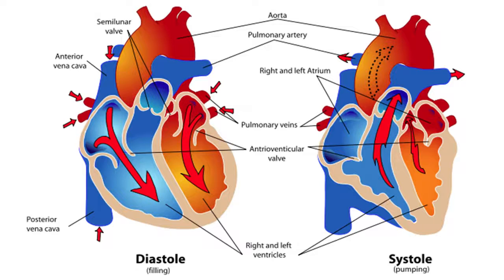The four chambers of the heart are continually contracting and relaxing in a pattern known as the cardiac cycle. As blood collects in the atria, the atria contract, pushing the blood through the tricuspid and bicuspid valves into the ventricles. The ventricles are filling, and this phase is called diastole. When the ventricles are full of blood, they contract to pump blood throughout the body — this pumping phase is called systole. The heart normally beats about 60 to 80 times per minute when at rest, but this can vary.